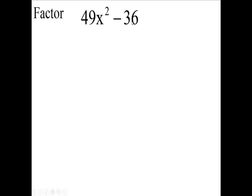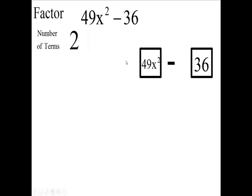Okay? We have two terms, and they are squares, aren't they? This is a square and this is a square. How do we know this is a square? Because 7x times 7x is 49x squared. And 6 times 6 is 36.